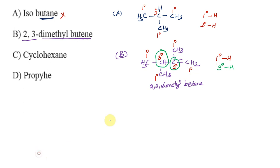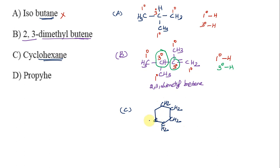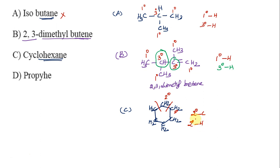Option C is cyclohexane. This is a ring structure. Here is CH2, here is CH2, here is CH2. Now looking at one carbon in the ring — it has an R group on each side, so this is a secondary carbon. All carbons in cyclohexane are secondary carbons, so the hydrogen is called secondary hydrogen.